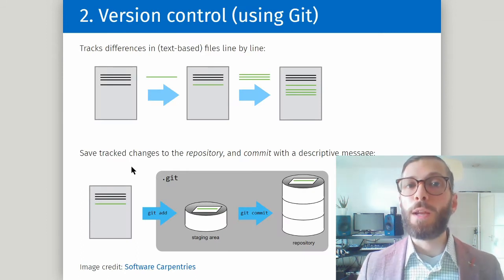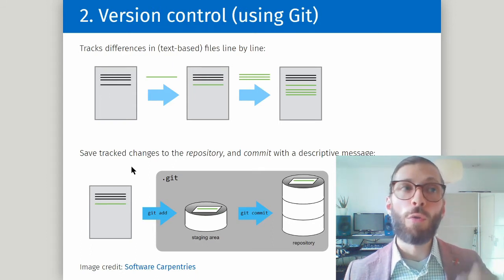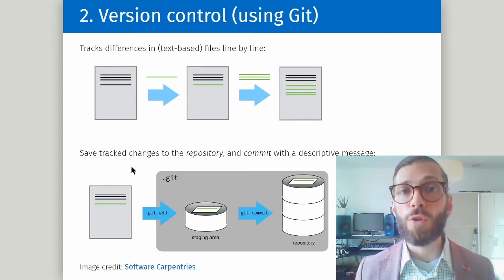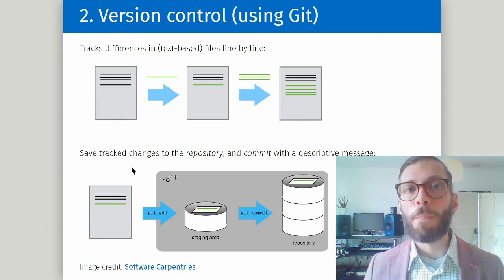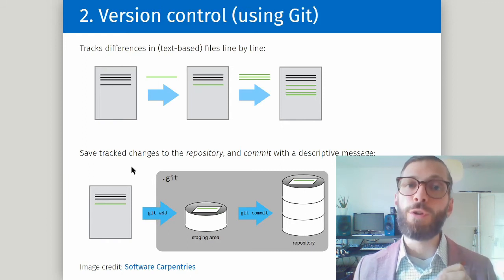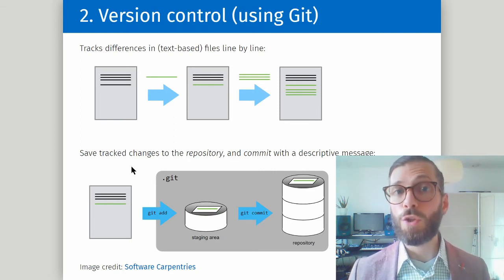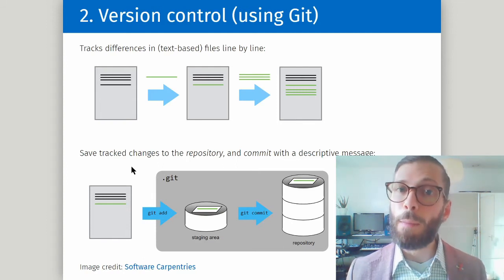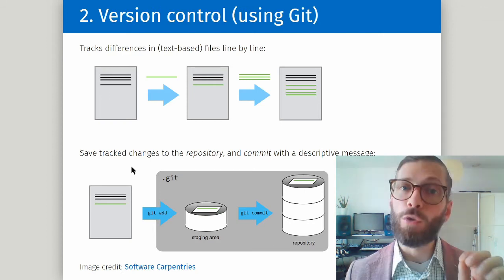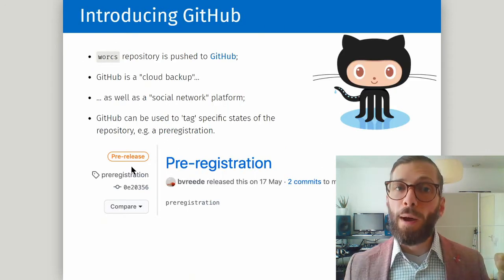The second tool I want to explain is version control using Git. You're probably using some kind of version control — keeping different versions with different file names, or maybe backing up on Dropbox — but Git is uniquely suited to research because it tracks differences in your files on a line-by-line basis. You then commit these changes to the files and add a descriptive message, for example: "This addresses reviewer 2's comment 3."